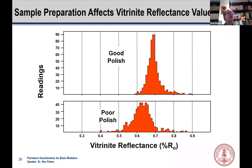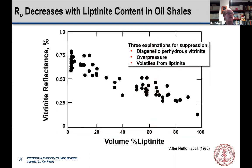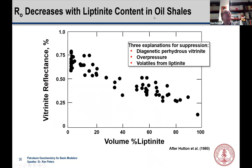Preparation of the sample is important. If you don't use a fine enough grit, you end up with grooves in the surface of the vitrinite which reduce the reflectance. This observation of suppression in liptinite-rich units has been around for a long time. Back in 1980, Hutton observed this looking at oil shales and showed that the greater the volume of liptinite, the more suppressed the vitrinite value ends up being. There are roughly three explanations that have been around for more than 40-50 years without clear resolution: diagenetic perhydrous vitrinite, overpressure retarding reflectance, and volatiles generated from liptinite impregnating the vitrinite and reducing its reflectance.